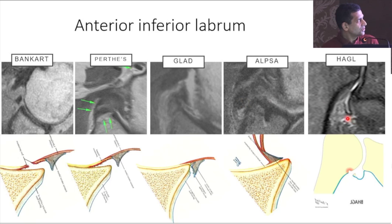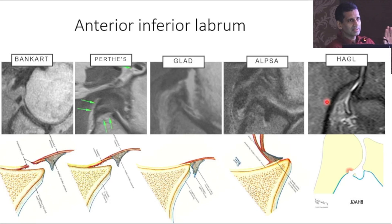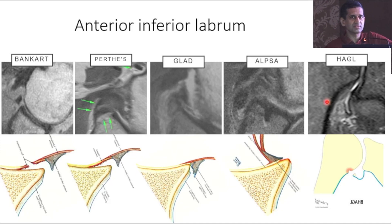The last lesion you often see is a Hill-Sachs lesion, which is not on the glenoid side — it happens on the humeral side. If you think about an anterior dislocation, it is like somebody kicked a door open. Depending on where and how hard you kicked it, either the door will break, the hinge will break, the door jamb where the hinge is attached will break, the entire door jamb will break, or the wall will break. Any of those things represent the spectrum of lesions.